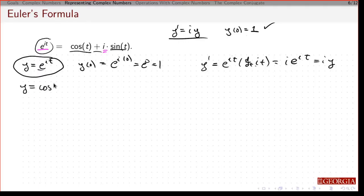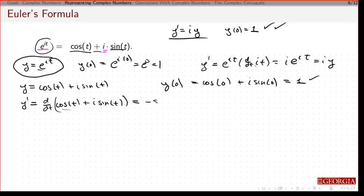Now suppose I do this. Suppose y is cosine of t plus i sine of t. If I plug in t equals 0, I'm going to get cosine of 0 plus i sine of 0. Cosine of 0 is 1. Sine of 0 is 0. 0 times i is 0. So that also satisfies the initial condition. What's the derivative? This is going to be the derivative of cosine of t plus i sine of t. Derivative of cosine is minus sine of t. That's a constant. Derivative of sine is cosine of t. And I claim that this is i times y.